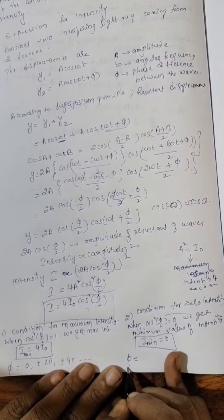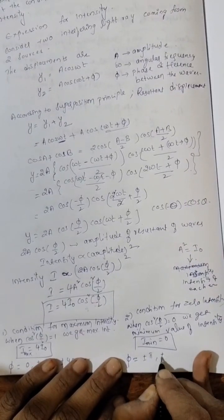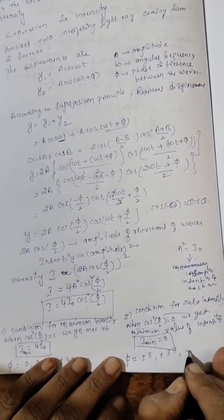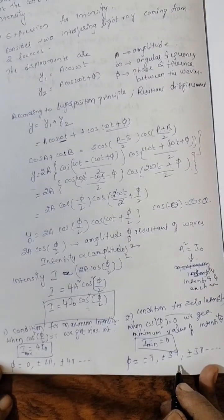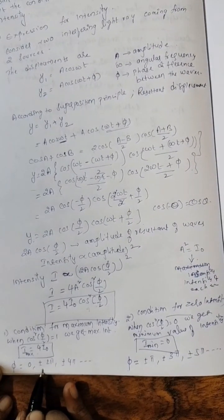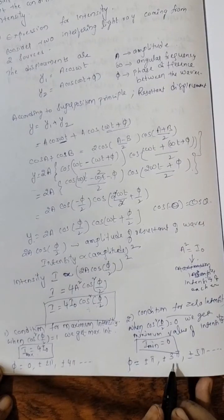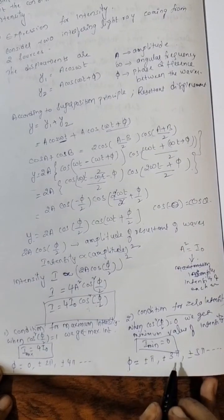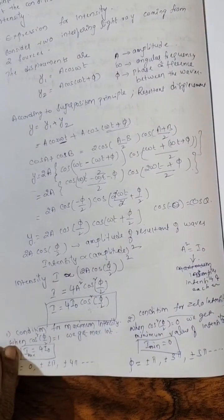And when we will get minimum intensity means when phi values are plus or minus pi, plus or minus 3 pi, plus or minus 5 pi, so on. Here pi values are even numbers of pi, and here see odd numbers: 1, 3, 5, so on. Here 0, 2, 4, so on.